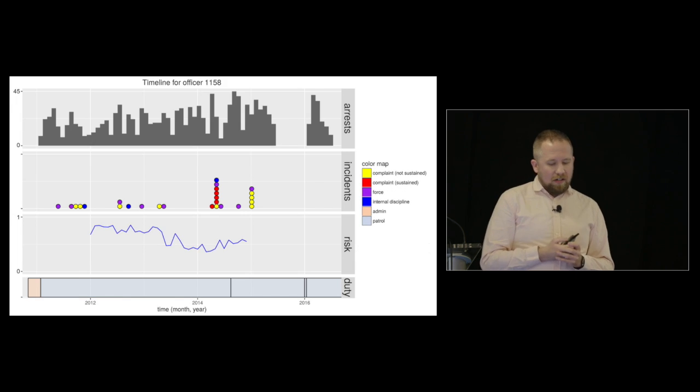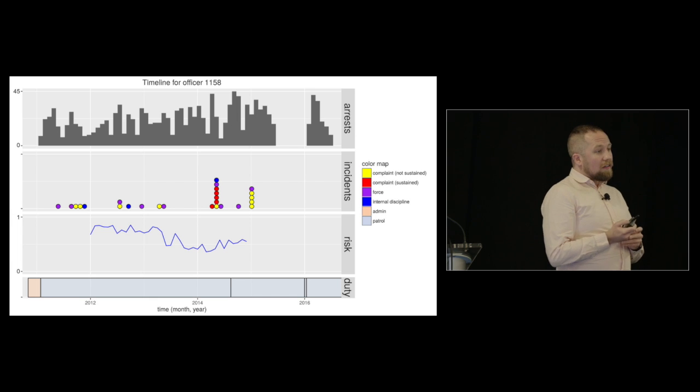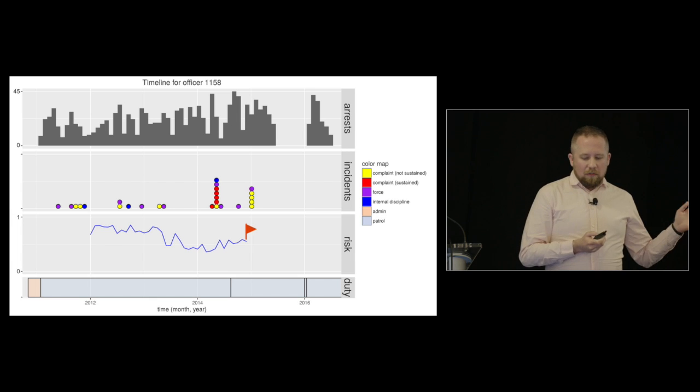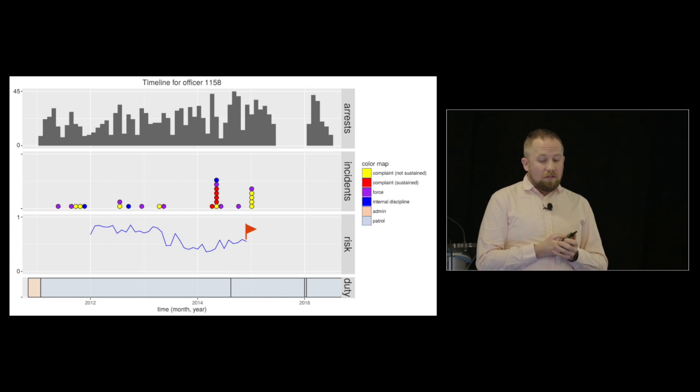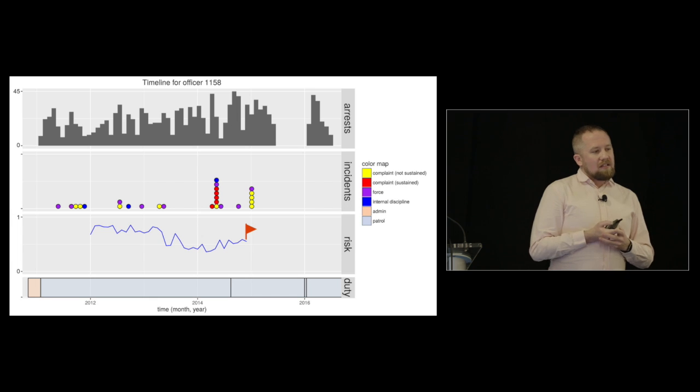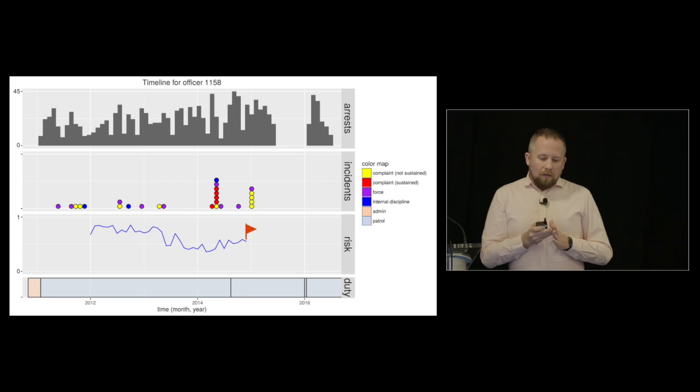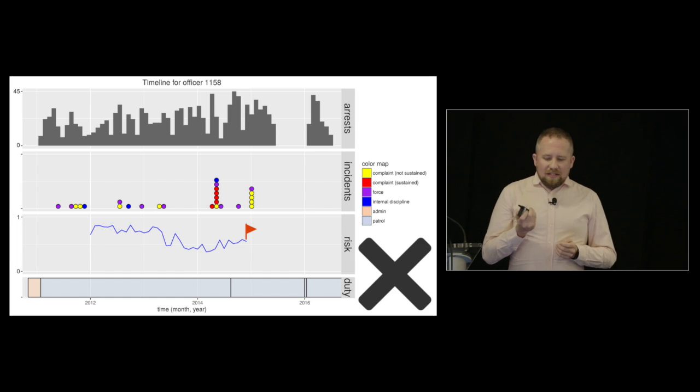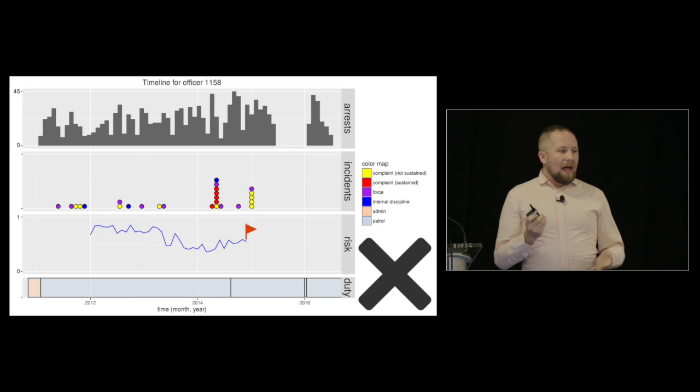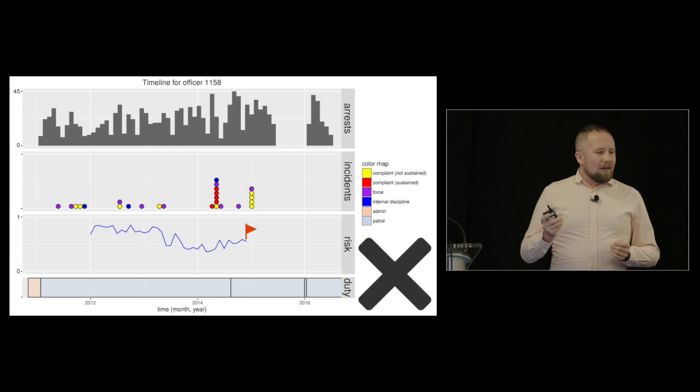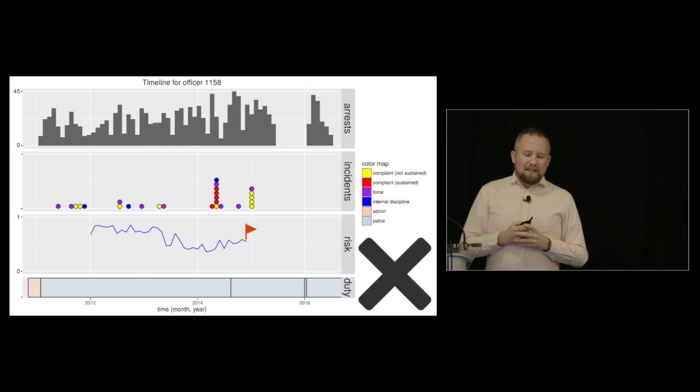Then we have this officer. Again, this officer has a fairly high score overall. There are a number of different incidents. This time we're going to zoom a little bit forward and do the end of 2015. We would have flagged this officer being at high risk of having an adverse incident. But after 2015, there's actually no incidents that happen. So this is an example where our model flagged an officer, but it wasn't right. And at first, we were really surprised by this.